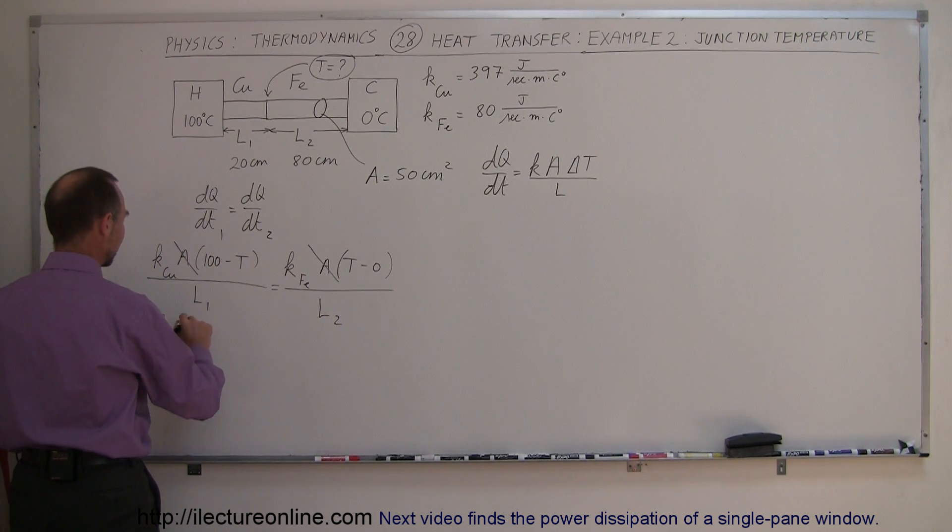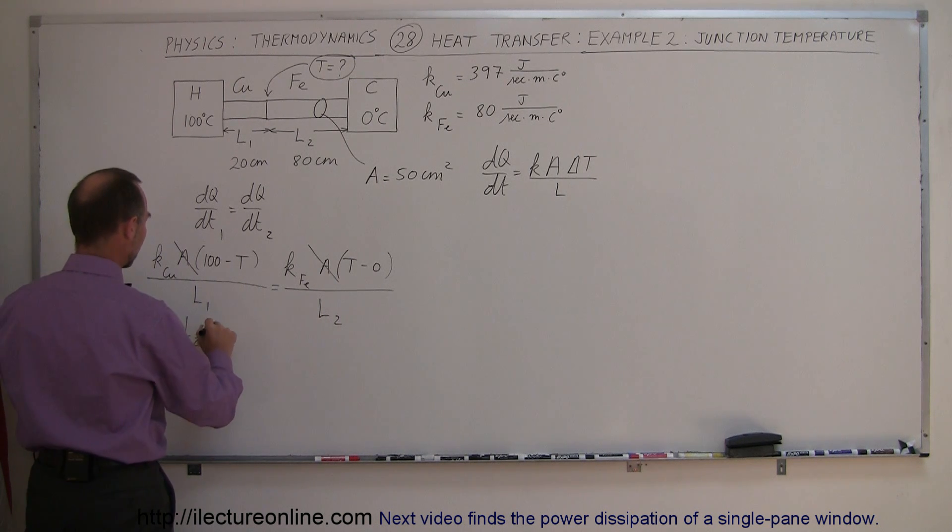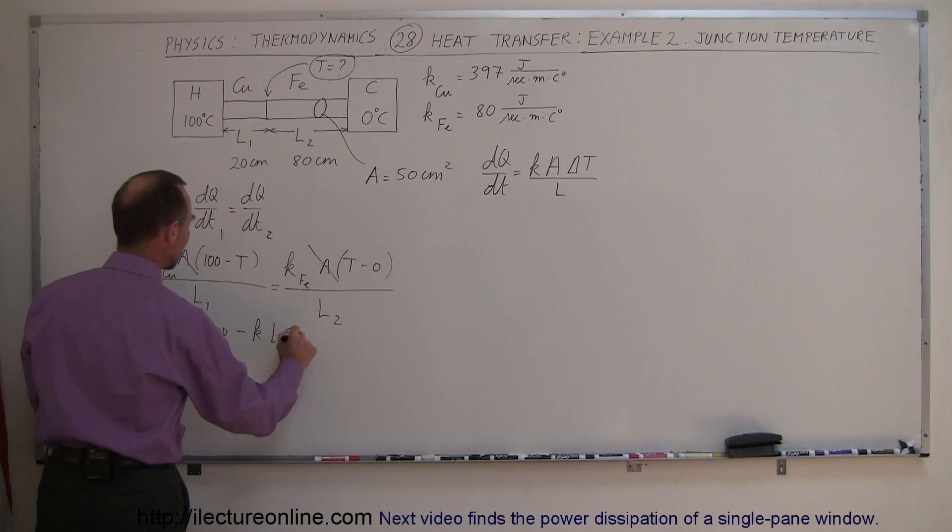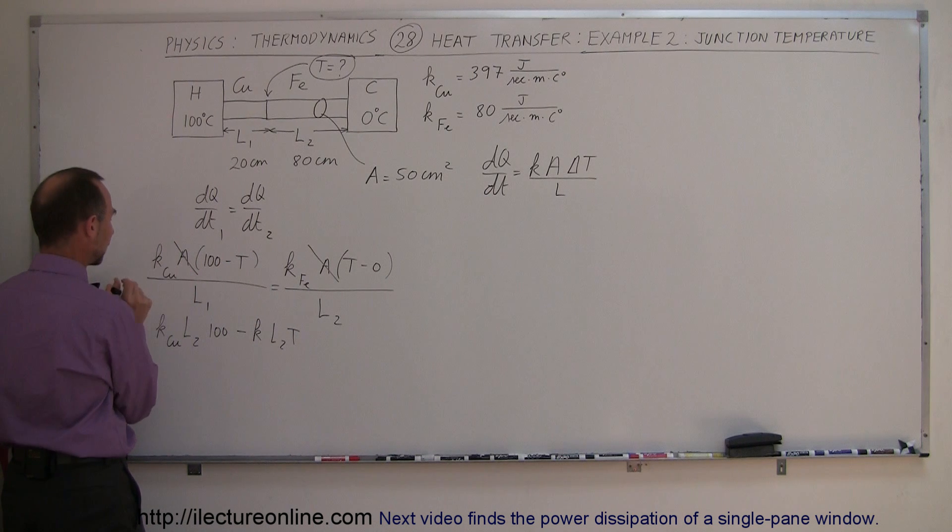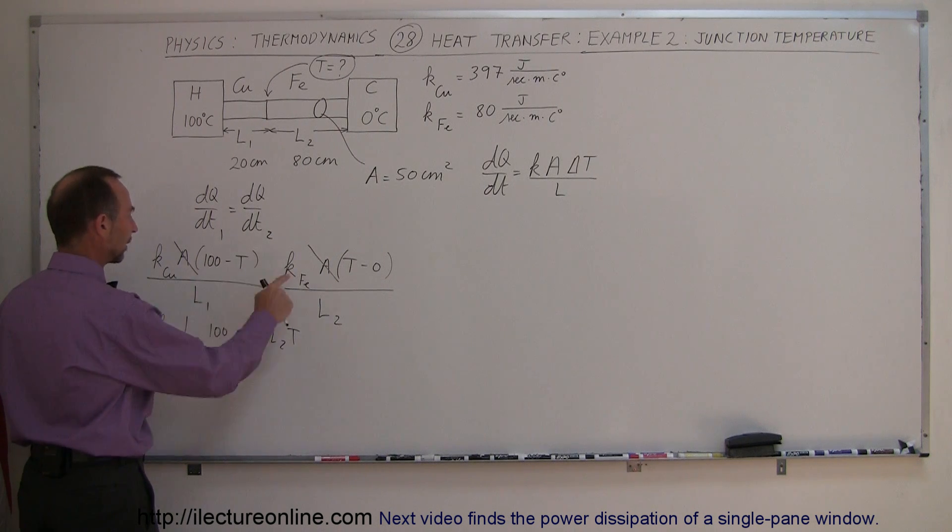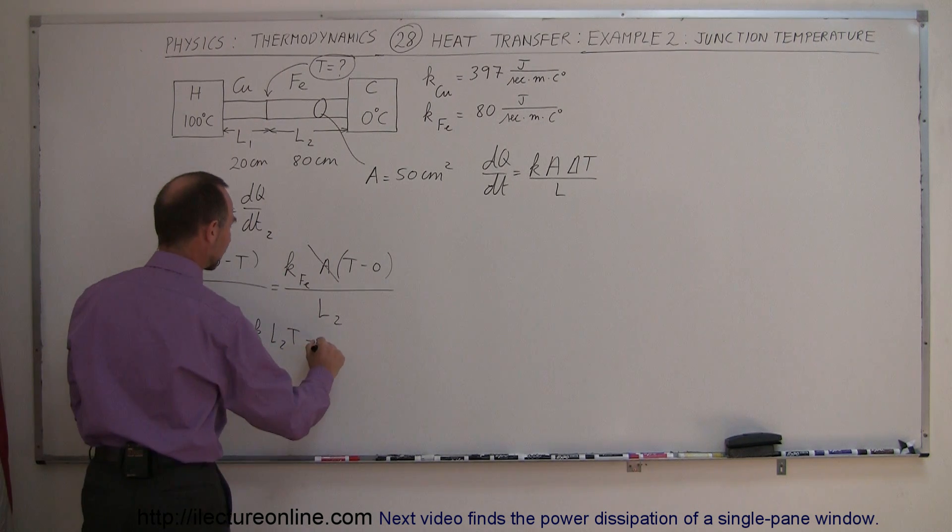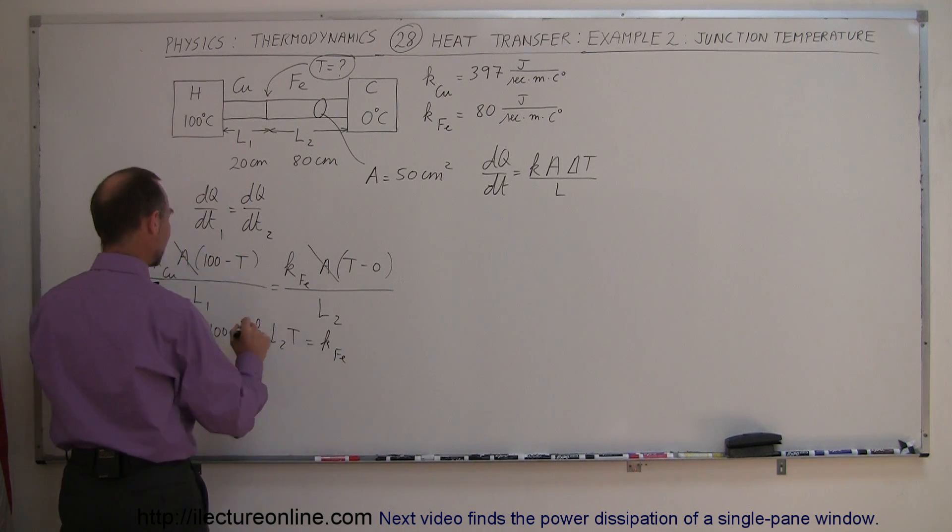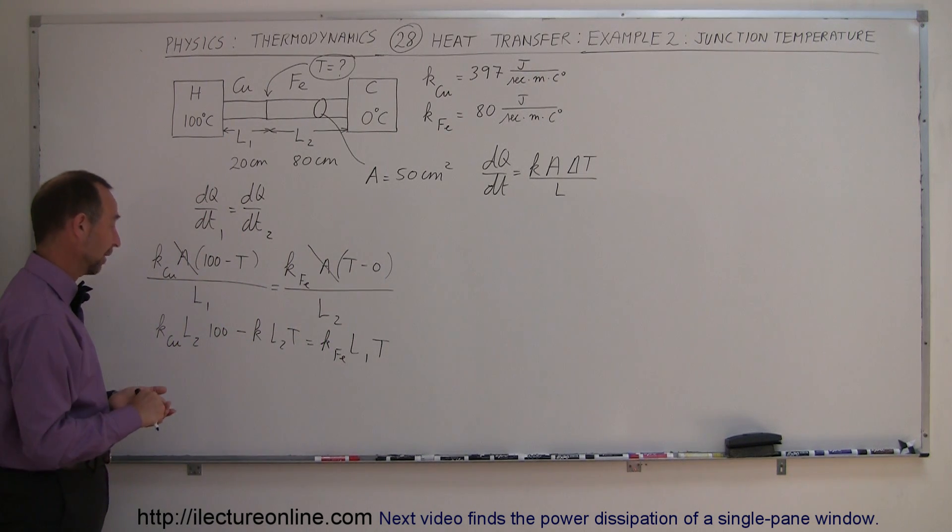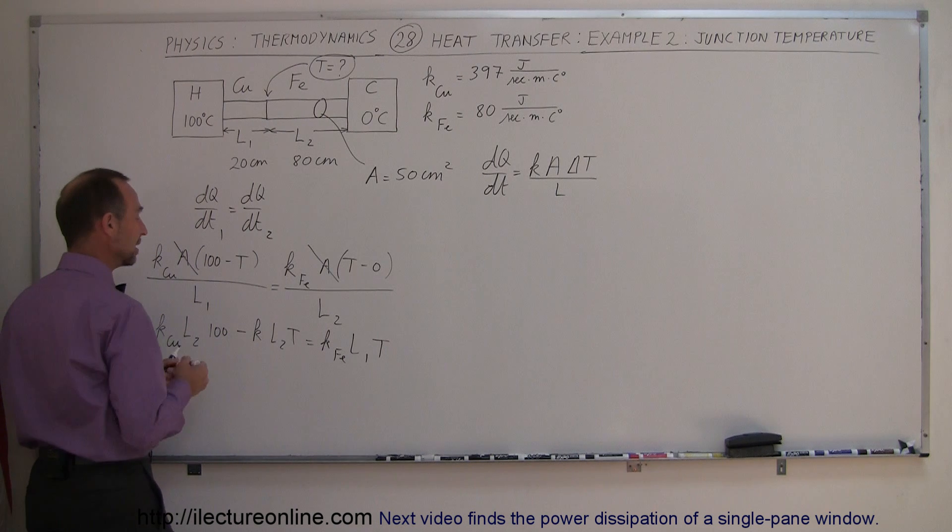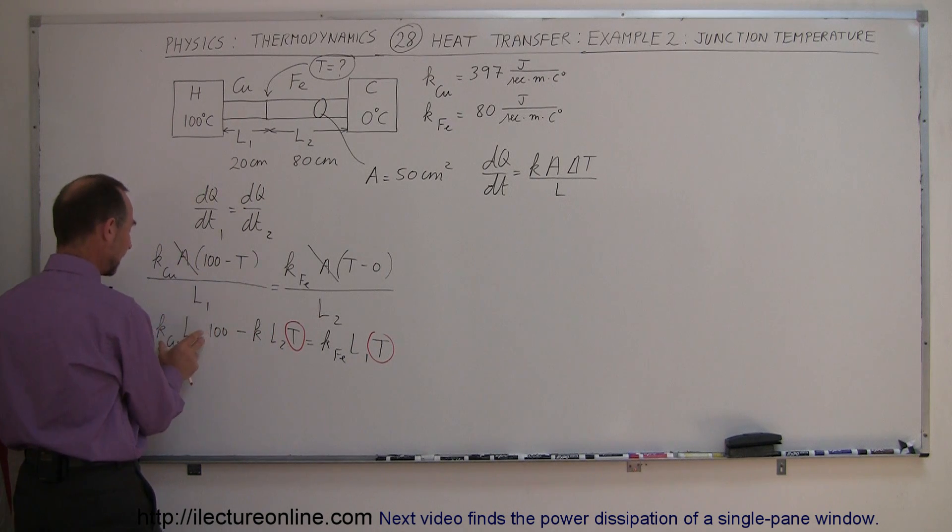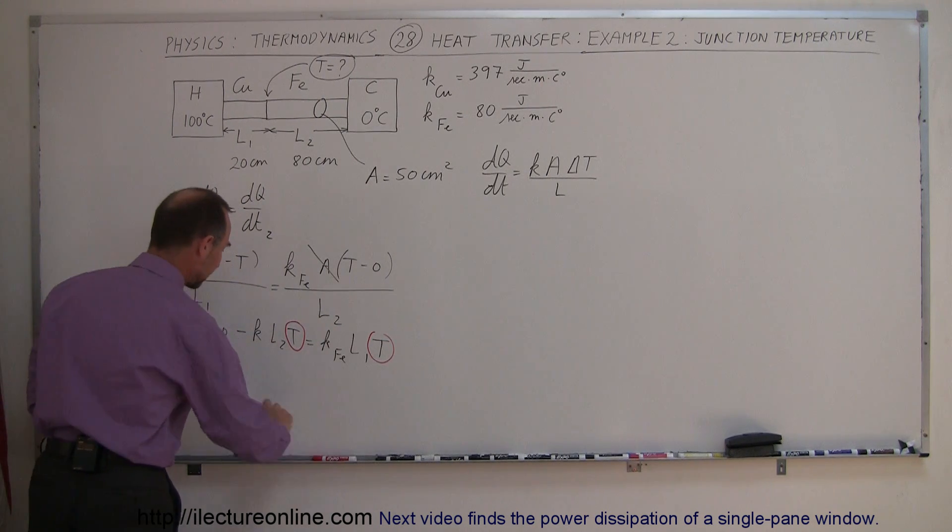So we say that K of the copper times L2 times 100 minus K times L2 times T. What I've done is taken the L2 and put it over here. Then I multiply it times 100 and multiply it times the minus T to get these two terms. Then I go ahead and put the L1 over here. So this is equal to K of the iron times L1 times T. Now, notice that I have two terms with T in it, which is what I'm looking for. So I'm going to take those two terms, put them on the left side and take this and put it on the right side. Separate the variables.